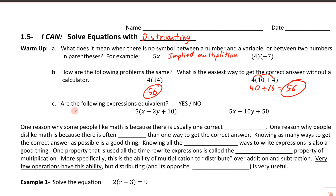Are the following expressions equivalent? We've got 5 times (x minus 2y plus 10), and over here we've got 5x minus 10y plus 50. We can apply the distributive property, drawing an arcing line from the 5 outside to every term inside. We get: 5 times x is 5x; 5 times negative 2y is negative 10y; and 5 times positive 10 is positive 50. So those are indeed the same.